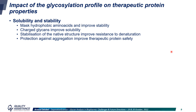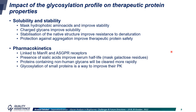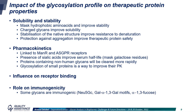Regarding pharmacokinetics, there is a critical role played by two receptors: mannose receptors and ASGPR receptors. The presence of sialic acids will improve serum half-life by masking galactose residues, and on the opposite, proteins containing non-human glycans will be cleared more rapidly. It should also be noted that glycosylation of small proteins is a way to improve their PK. Glycosylation can also have a role on receptor binding, and finally, it can impact immunogenicity, as some glycans are immunogenic, such as those containing N-glycolyl-neuraminic acid, gal-gal motifs, or fucose with alpha-1,3 linkage.